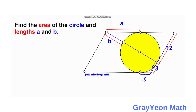Next, notice that this point is actually forming a 90-degree angle, because this is a point of tangency. This triangle is actually a right triangle.